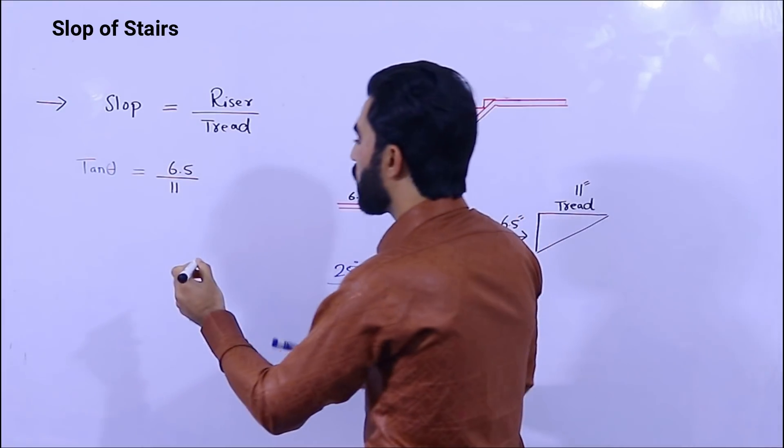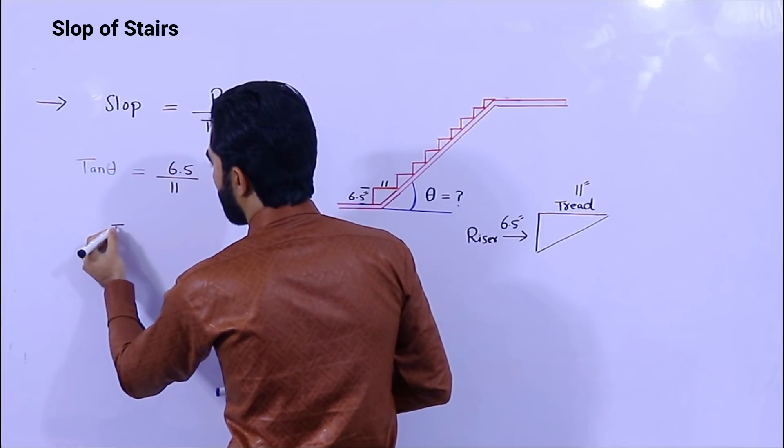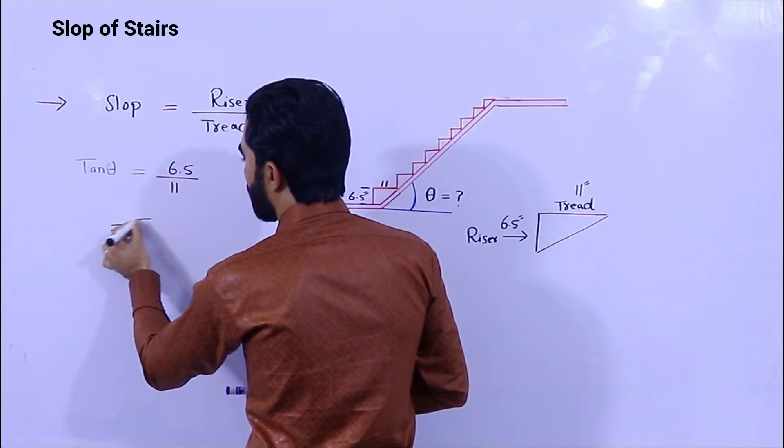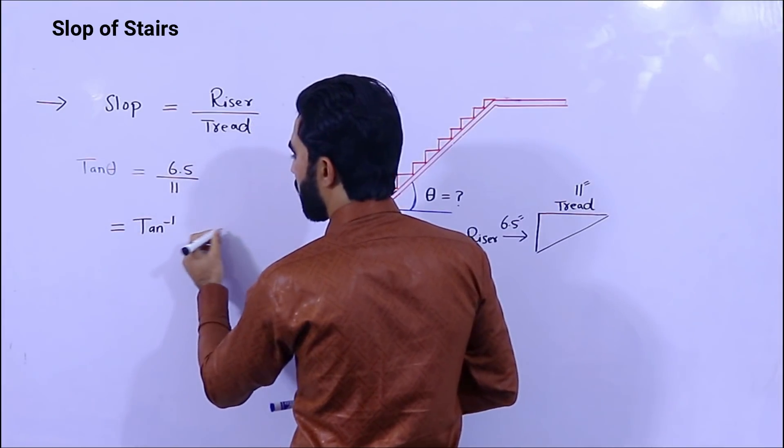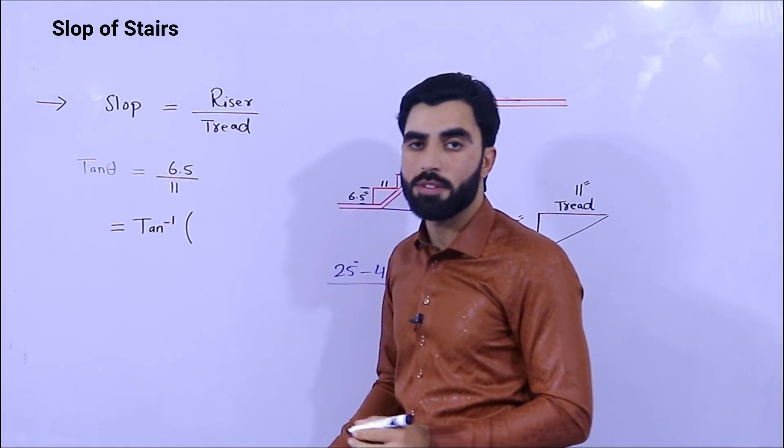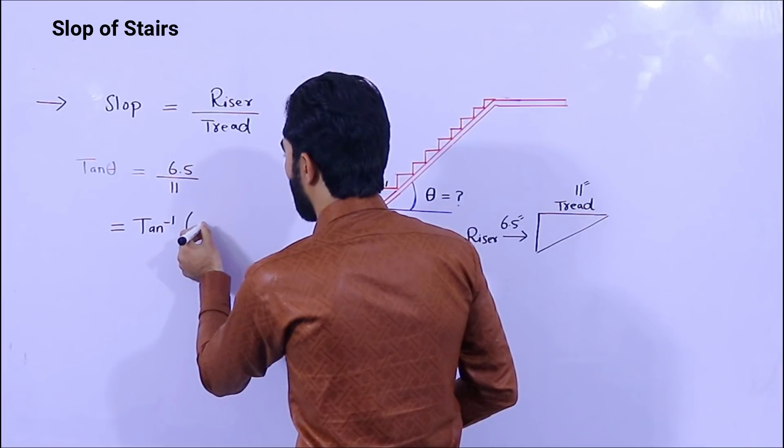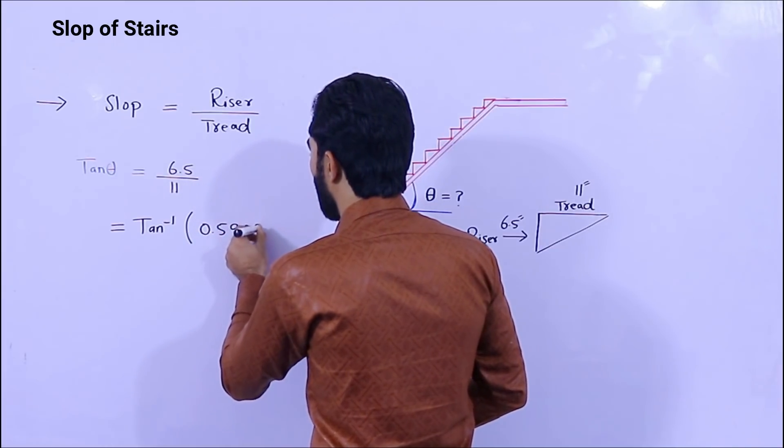From this you will see tangent inverse. Tangent inverse - when you do calculation of this, 6.5 divided by 11, you will get the value 0.5909.